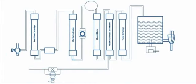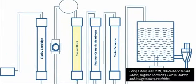Then the water goes to the chemi block. This cartridge removes colour, odour, bad taste, dissolved gases like radon, organic chemicals, excess chlorine and its by-products, pesticides etc.